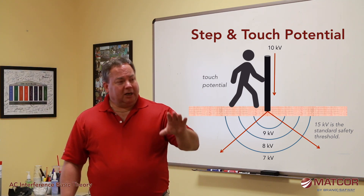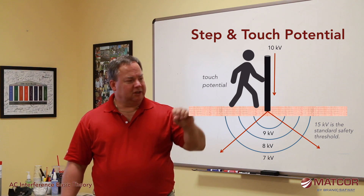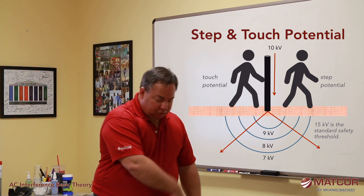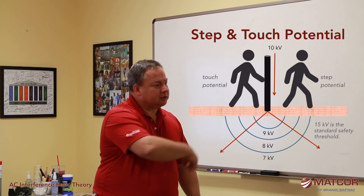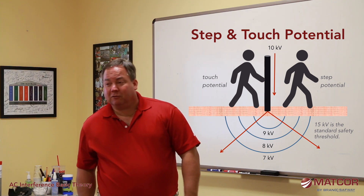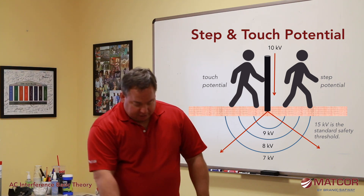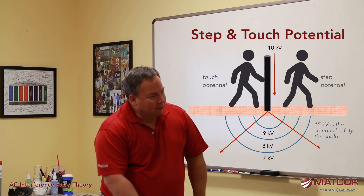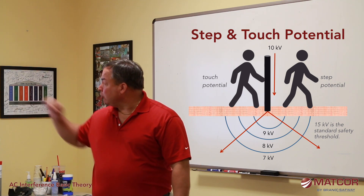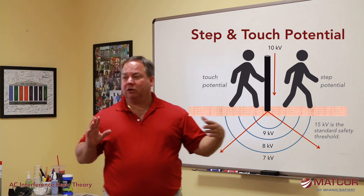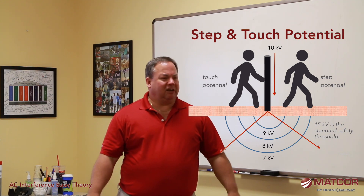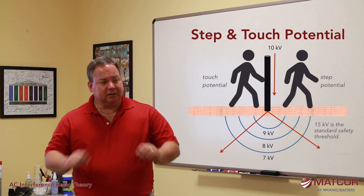So 15 volts was decided to be the maximum allowable threshold for step or touch potential. Step potential is a little different — you don't actually have to touch the device. The fact that there's a large voltage gradient around that device, and your feet are spanning that gradient, means one foot is closer to the source and one foot is further away. The voltage gradient can cause current to flow up one foot and down the other. That's called step potential — and step and touch potential is what's discussed in safety when it comes to electrical fields.